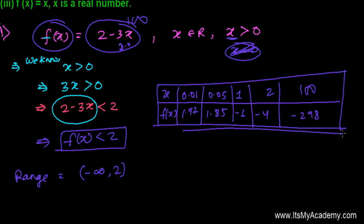So you can see these all numbers, these all are less than 2. So by looking at this table, it's very clear that always our f of x value is always less than 2. So therefore, the range is from negative infinity to 2.